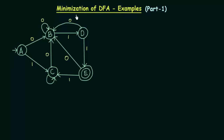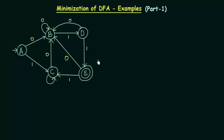In the last lecture, I gave you the theoretical explanation of minimization of DFA and we also learned why minimization of DFA is required. So in this lecture, we will be trying to understand practically about minimization of DFA using an example. Here we have an example DFA in which I have five states A, B, C, D, E. Our task is to minimize this DFA — that is, I want to design another DFA which performs the same kind of task but using the minimum number of states possible.